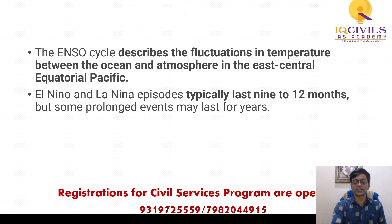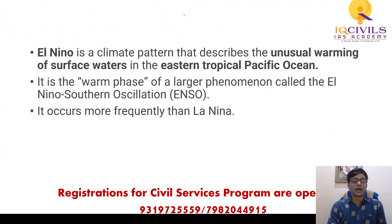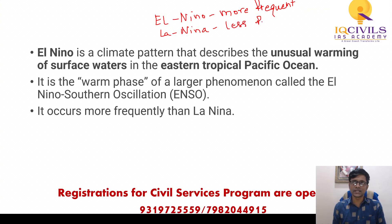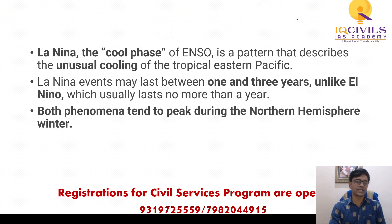We call ENSO an ocean-atmosphere system because in El Niño, La Niña, or the neutral phase, the ocean temperature is either higher, lower, or normal, and simultaneously the air pressure at the sea surface either increases, decreases, or remains normal. El Niño normally lasts 9 to 12 months, while La Niña lasts one to three years. El Niño is more frequent but shorter in duration; La Niña is less frequent. We call La Niña the cool phase and El Niño the warm phase.